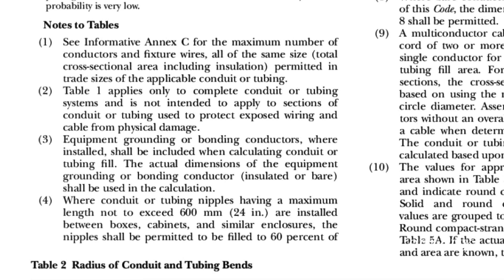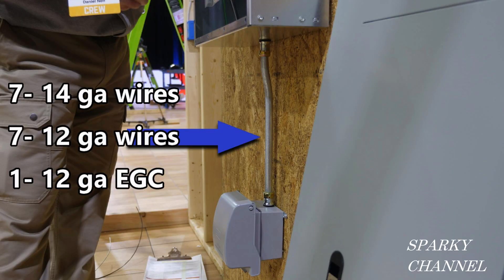Once again, we'll go to Notes to Tables, but this time to Number 3. Equipment grounding or bonding conductors where installed shall be included when calculating conduit or tubing fill. The actual dimensions of the equipment grounding or bonding conductor, insulated or bare, shall be used in the calculation. So that means we have seven 14-gauge wires and eight 12-gauge wires. Let's check it out.